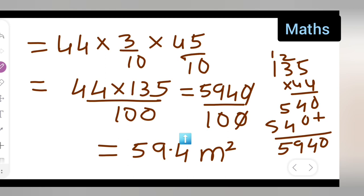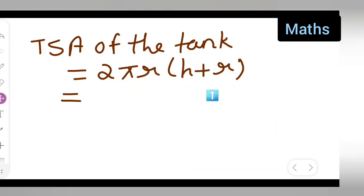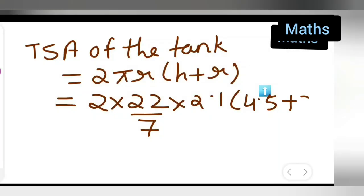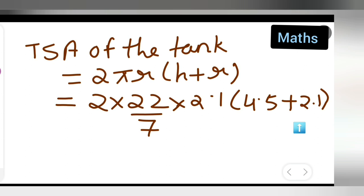Now let us find the total surface area of the tank. The formula is 2πr(h + r). Substituting: 2 × 22/7 × 2.1 × (4.5 + 2.1). Adding 4.5 and 2.1 gives 6.6.